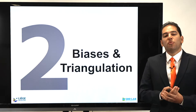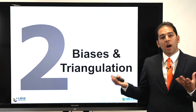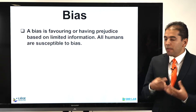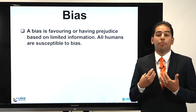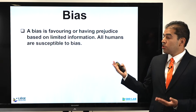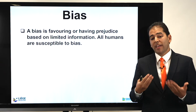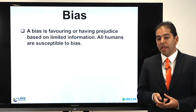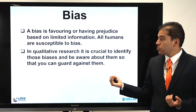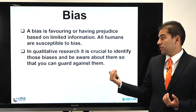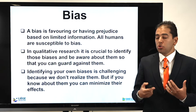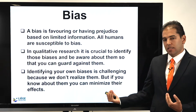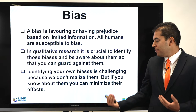What are the types of biases we encounter when we do qualitative research, and how can triangulation respond to that and try to reduce these biases? First, let me define a bias. A bias is a favoring or having a prejudice based on limited information. All humans are exercising these susceptible biases. In qualitative research, it's crucial to identify those biases and be aware of them so you can guard against them. Identifying your own biases is challenging — we don't realize them — but if you know about them, you can minimize their effects.